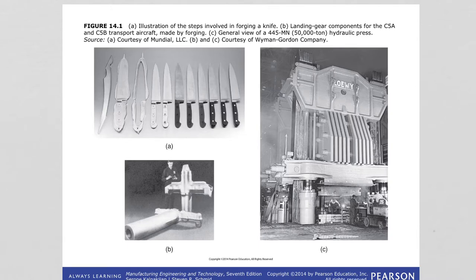Here in image A we are seeing the steps involved in forging a knife — step by step, the knife is formed. In image B we are seeing landing gear components made by forging — very large parts can be shaped by forging. And in image C we are seeing the equipment, the hydraulic press that does the forging.